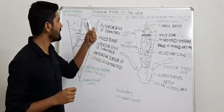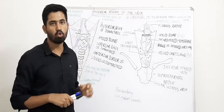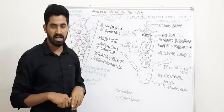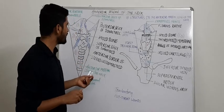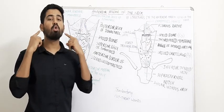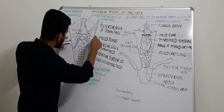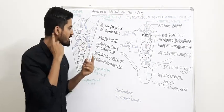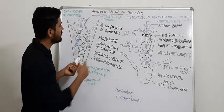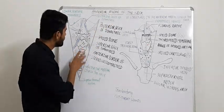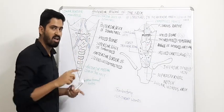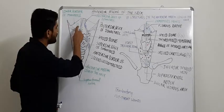Today we will read the anterior region of the neck. The anterior region of the neck is divided into two portions: first, the basic structures in the anterior midline of the neck, and second, the triangles. The anterior region is extended between the two sternocleidomastoid muscles, from the mastoid process to the angle of the mandible. This region includes the triangle section, the suprahyoid area, and the infrahyoid area.